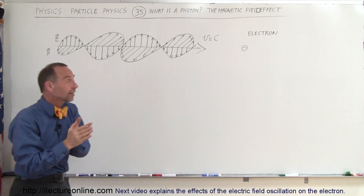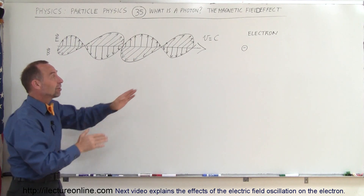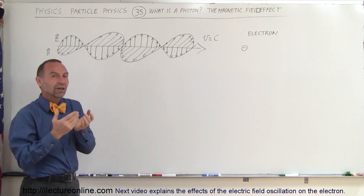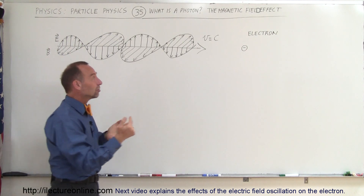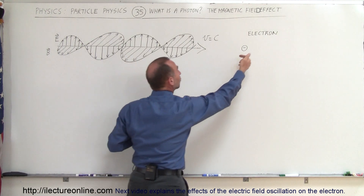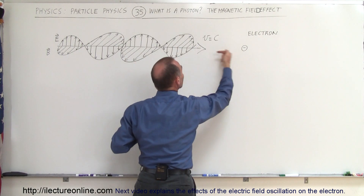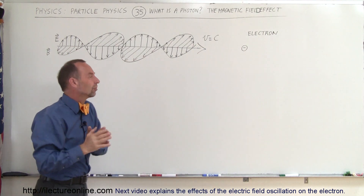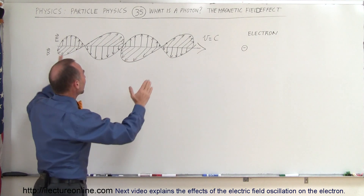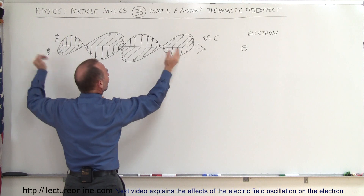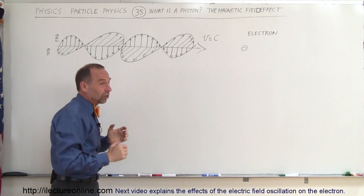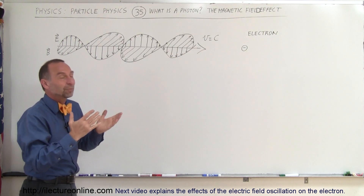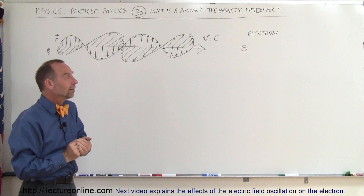Now what happens when a photon like that meets up with an electron? The effect is as if the electron is flying towards the photon. Better to look at it this way: imagine this is a stationary photon. Of course, photons cannot be stationary — they move through space at the speed of light.